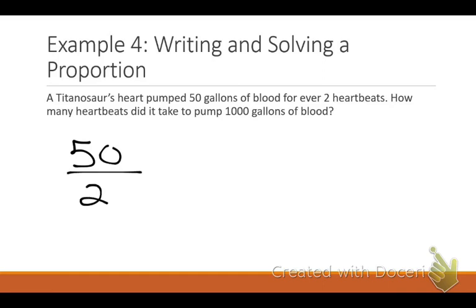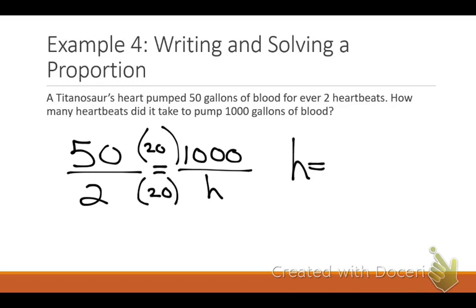That's how I did it too. 50 over 2, so that's gallons of blood over heartbeats. Blood over heartbeats equals blood over, don't know how many heartbeats. How many of you used mental math? Is there a clear connection in my numerators? Yes. That's the one I did too. Could you use cross-products also? Absolutely. If you did mental math, what is my missing link? 20. So then 2 times 20 is 40. So H equals 40. You've got to make sure you label. What's my label? 40 heartbeats.